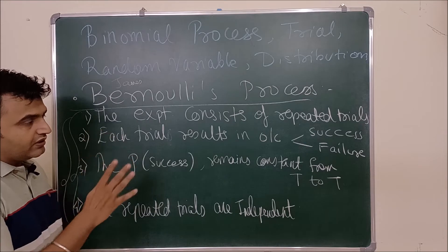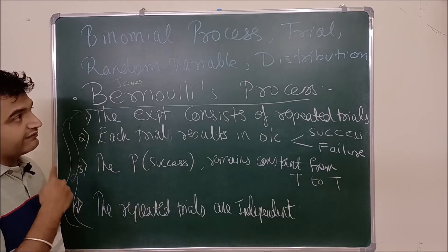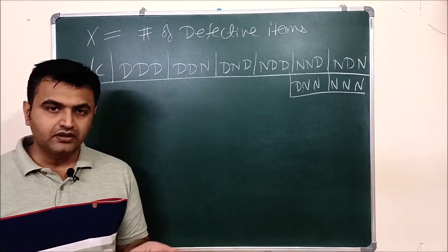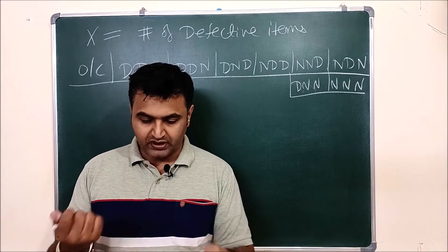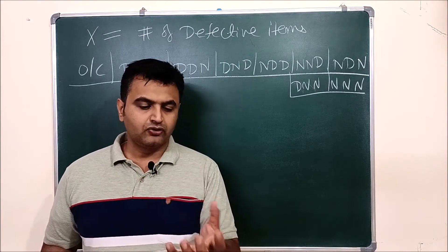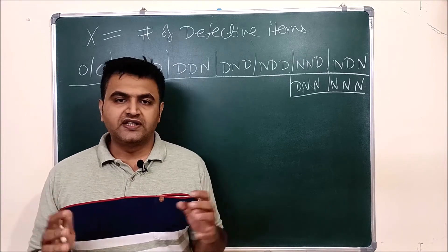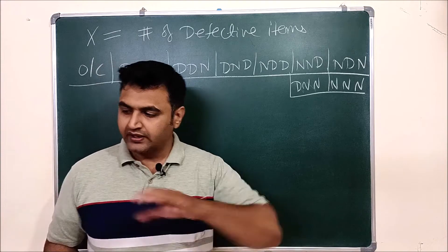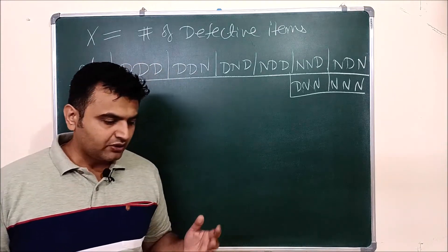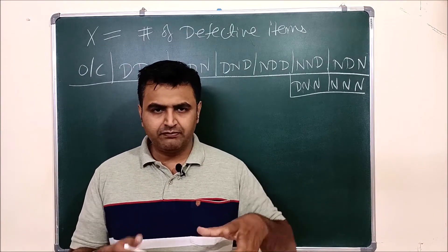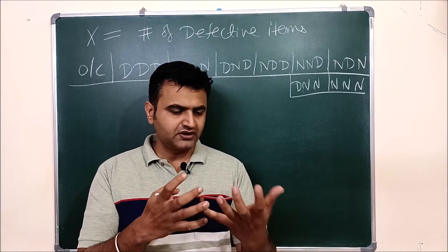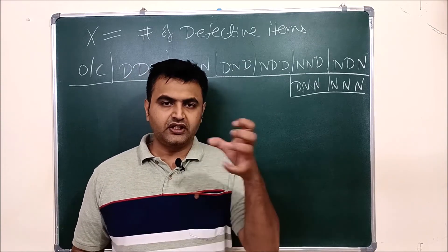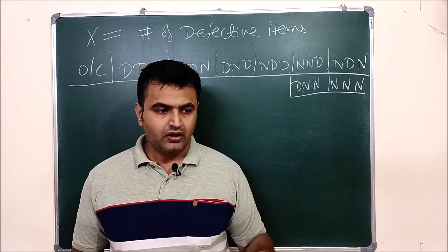Let me take an example to explain this more clearly, and from that example we will arrive at the definition of binomial random variable and the binomial distribution. Suppose you are a checking inspector and there is a conveyor belt; a box is going through this belt. You open a box, take out the product, and see whether it is defective or not. If it is defective, I call it a success because my job is to find the defective items. Now suppose in each box there are 20 items, but I pick up three items from each box, checking how many are defective. So X is the number of defective items.